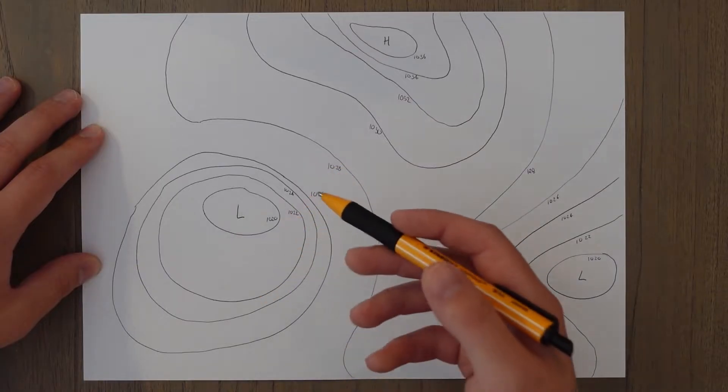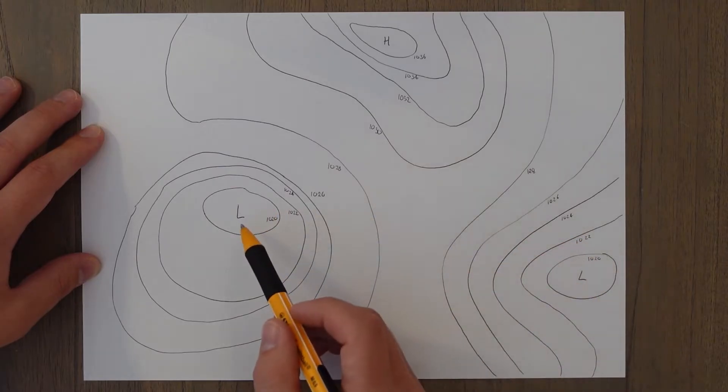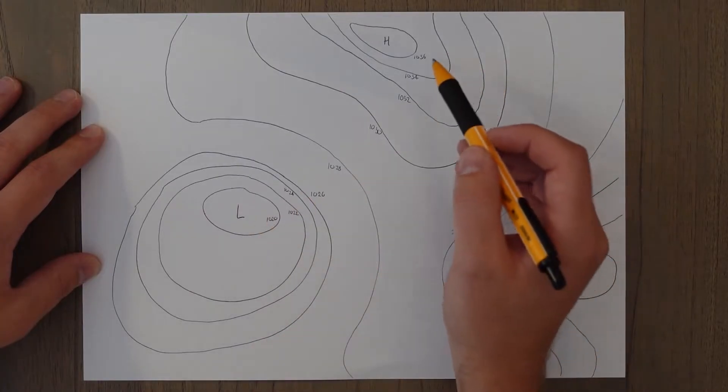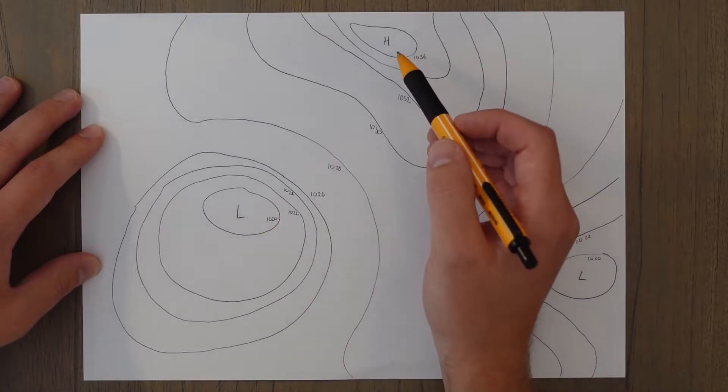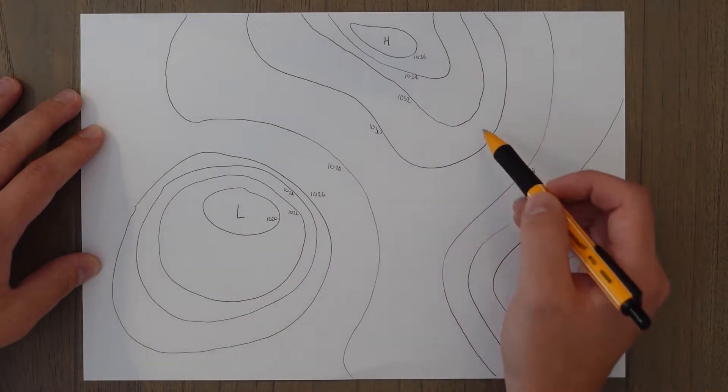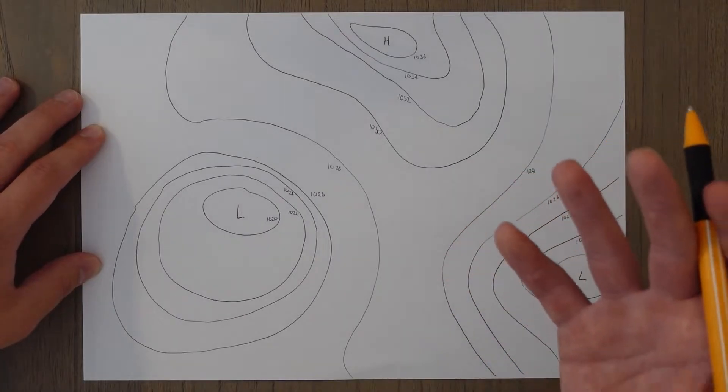We get various different patterns emerging in isobar charts such as lows or depressions or sometimes called cyclones. We get highs which are known as anti-cyclones, and we get other features such as troughs, ridges and cols. And now we're going to have a look at some of them in more detail.